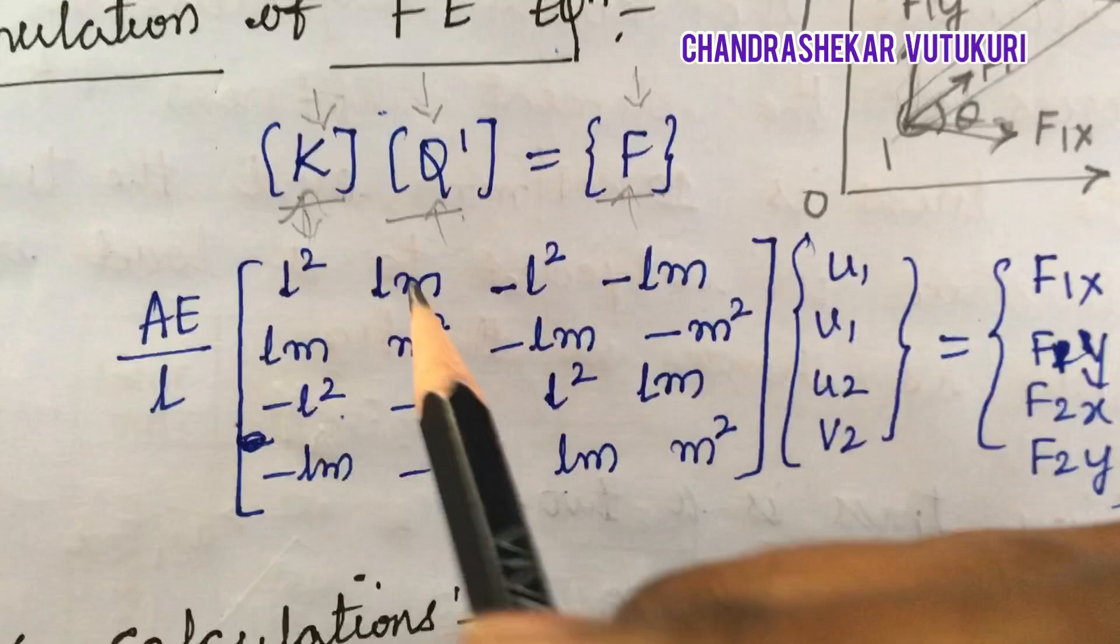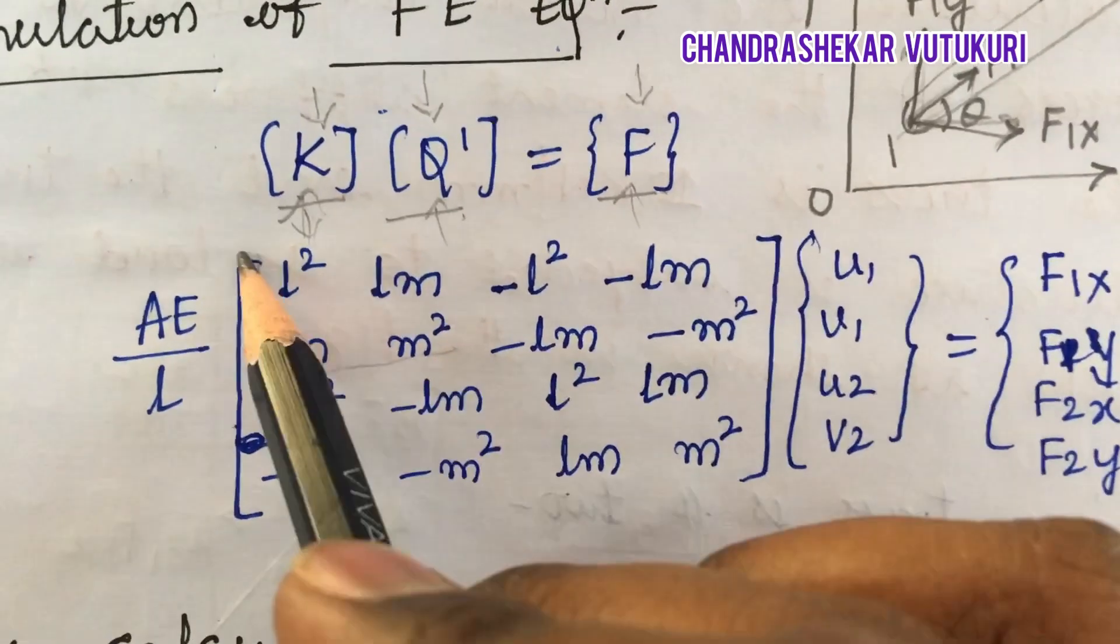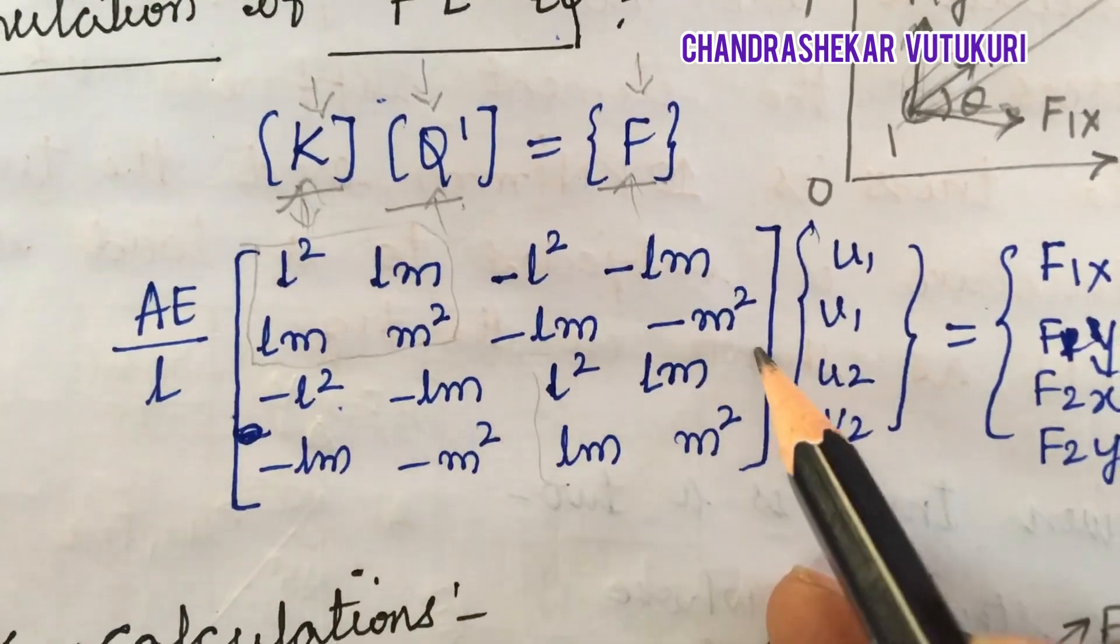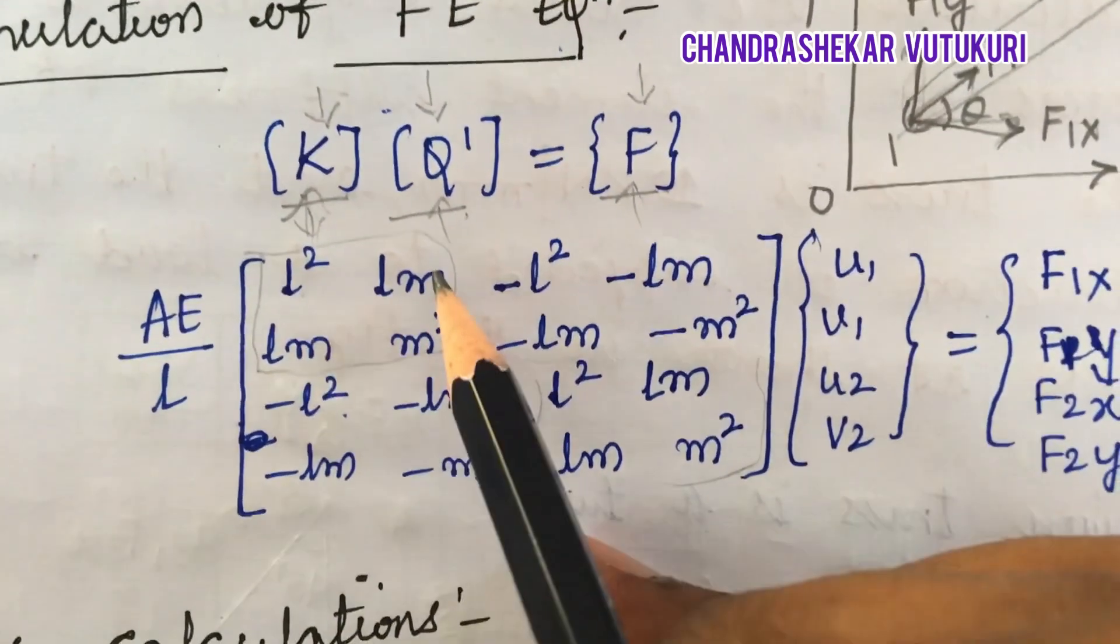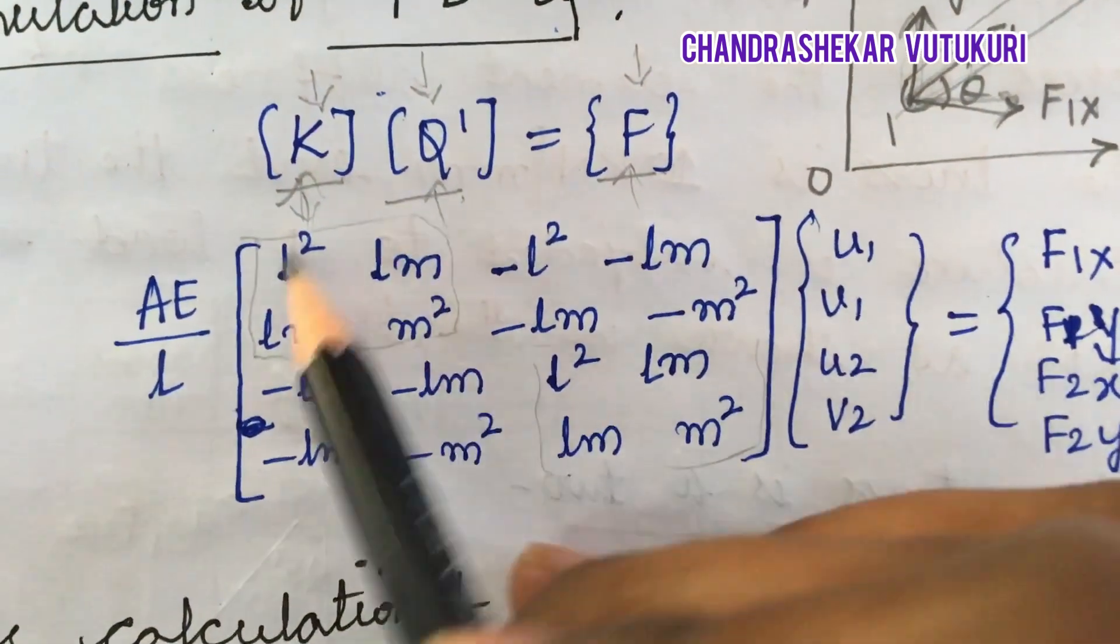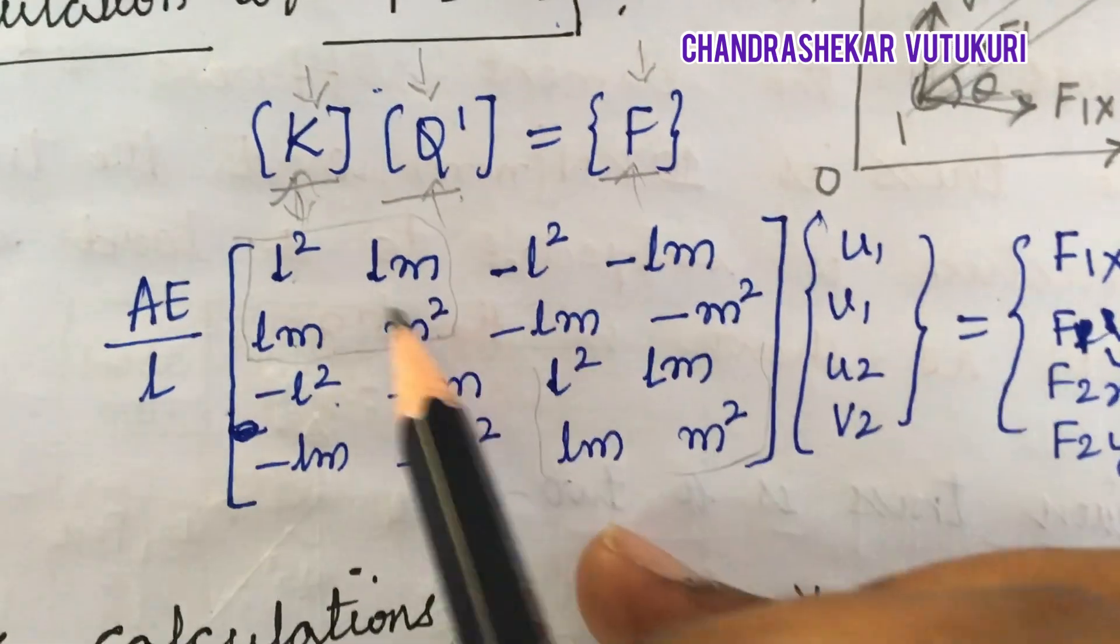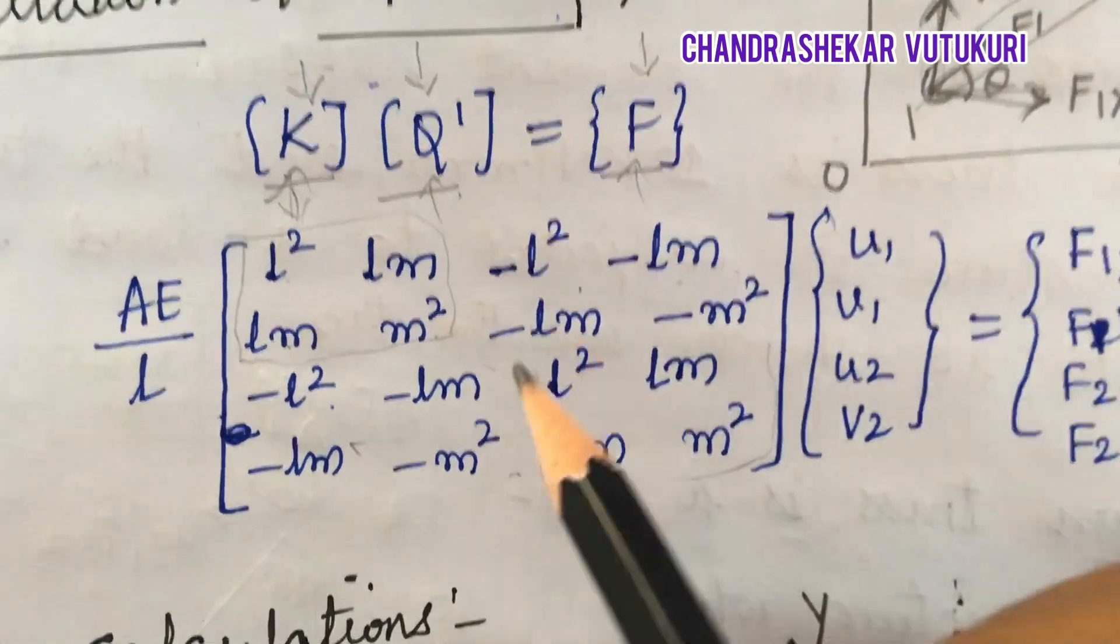The matrix has positive elements in the diagonal with L square, L M, L M, M square. The next 2 by 2 matrix is negative with the same diagonal elements.